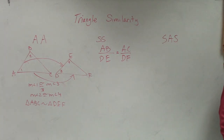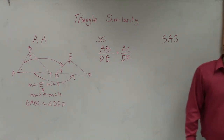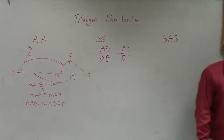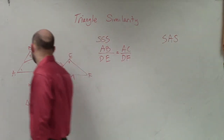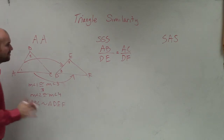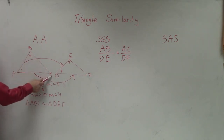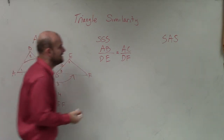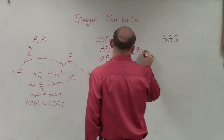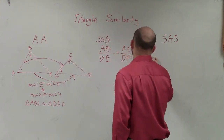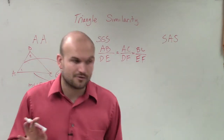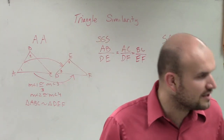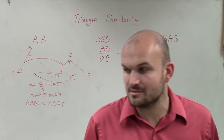And for side-side-side, if you can show that all three sides are proportional to each other — so AB over DE equals AC over DF, and BC is proportional to EF — as long as you can show that all three sides are proportional to each other, then you can prove that the triangles are similar.